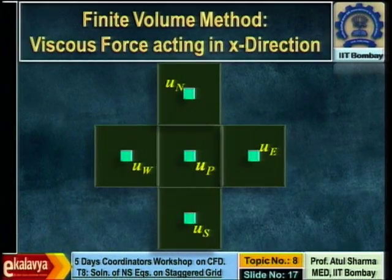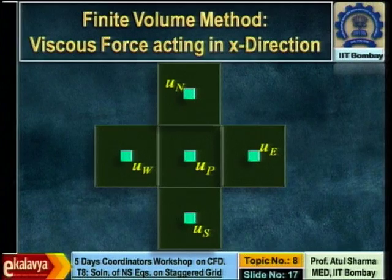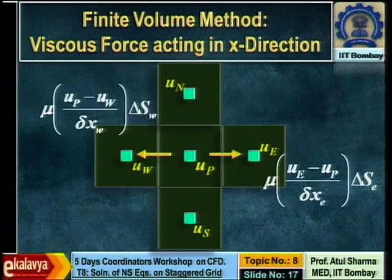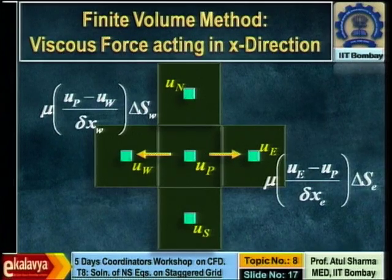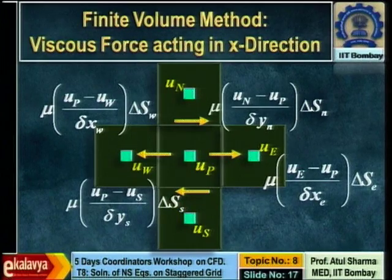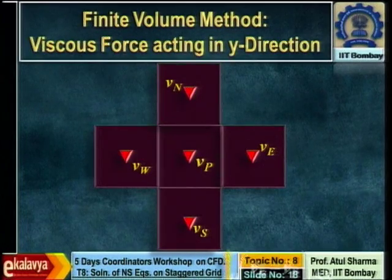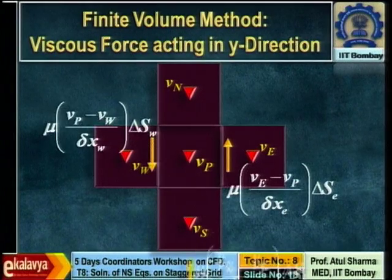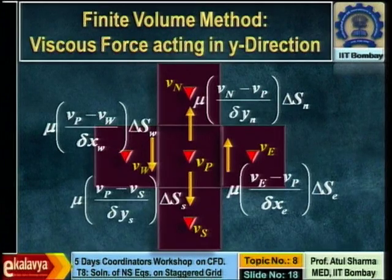Moving on to the diffusion term: in x-momentum it is the viscous force in the x direction, requiring normal gradients. In a Cartesian coordinate system this is straightforward because grid points lie along normal directions. We use piecewise linear approximation to get the viscous forces. On two faces the gradient is in the normal direction and on two faces it is in the shear direction. Similarly for viscous forces in y and for conduction heat fluxes.